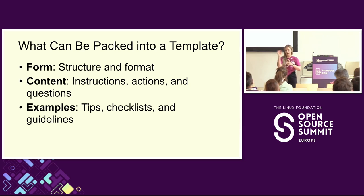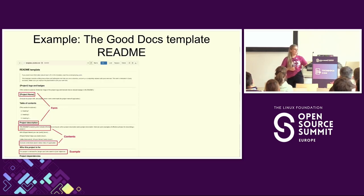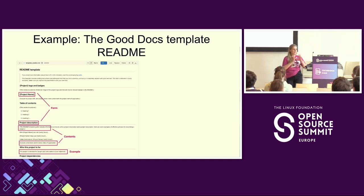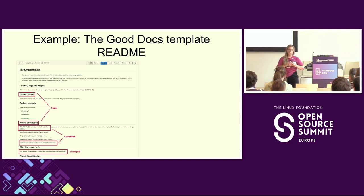On the next level, a template can also contain specific guidelines — like examples of wording you can use. There are several levels depending on how detailed the template is, and it's not only about outlines of the structure — that's what I wanted to highlight. Here's an example of one of the templates we're building in the Good Docs Project: a README, which I think is the most relatable one for an open source conference.